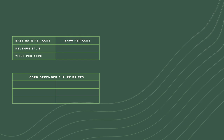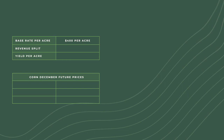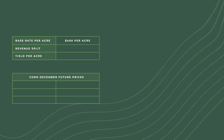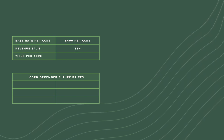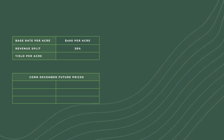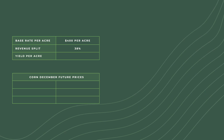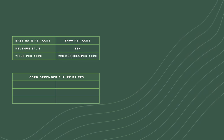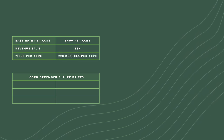Consider the following example. A farmer agrees to a $400 per acre base rate and decides to grow corn this year. Per the terms of the lease agreement, the corn flex revenue split is 38%. The farmer then harvests their crop and gets an average yield of 220 bushels per acre.